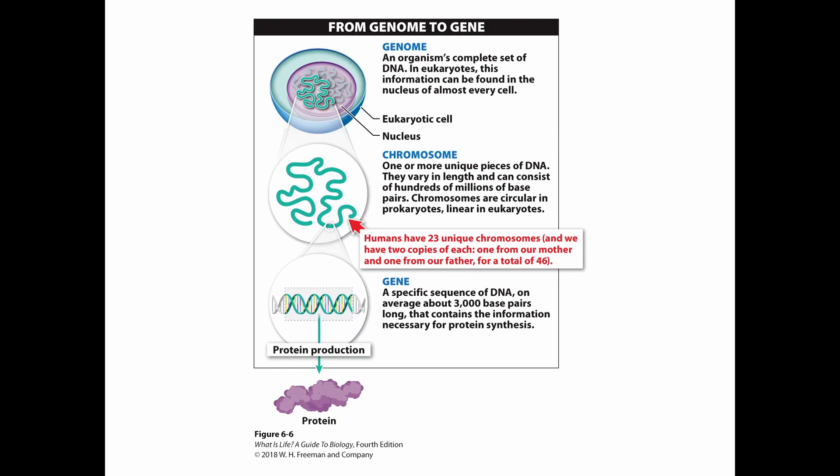All of the DNA together is going to form what we call the genome — the complete set of DNA. We find this in the nucleus when we're looking at things like animals and plants. That genome can be broken down into segments or sections called chromosomes, which are one or more unique pieces of DNA that can vary in length — hundreds of millions of base pairs long. They take a particular shape depending on which organism you are: if you're prokaryotic, you have circular chromosomes; if you're a eukaryotic cell like an animal or plant cell, your chromosomes are linear.